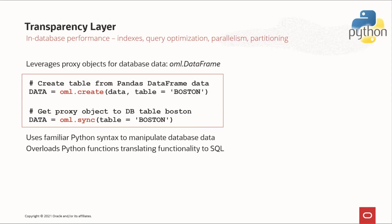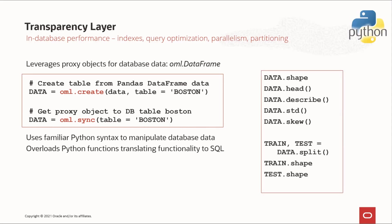The OML for Python transparency layer provides the foundation for leveraging in-database performance. Using proxy objects and overloaded functions, users can take advantage of database column indexes, query optimization, parallelism, and table-level partitioning, which can greatly improve performance on database table operations. Here we see how we can create a table from a pandas DataFrame using OML create, specifying the table name we wish to use — in this case, Boston. If the table already exists in a database, we can use the function OML sync and specify the table name we wish to retrieve. This returns a proxy object that we can then use to invoke familiar pandas functions like shape, head, and describe, and even take advantage of Python syntax for splitting data into train and test sets. These overloaded functions, in effect, translate desired functionality to SQL for in-database processing.